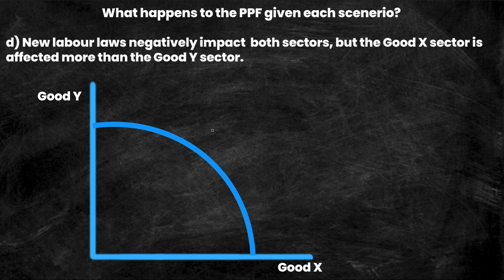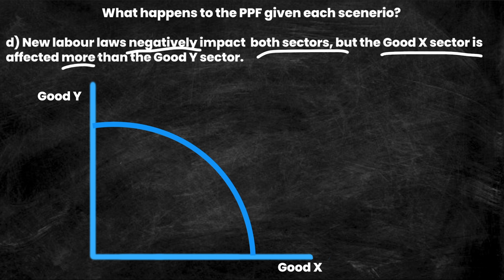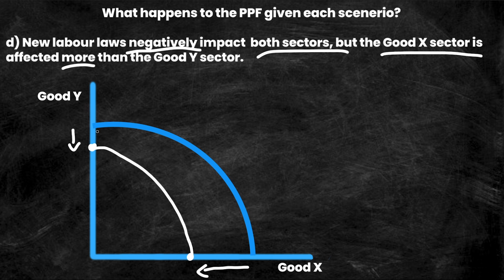Finally, example D: new labor laws negatively impact both sectors, but the good X sector is affected more than the good Y sector. Both intercepts move closer to the origin, but since good X is affected more, it shifts in closer to the origin than good Y. So we see a smaller decrease in Y and a greater decrease in X. Our new PPF curve shows both good Y and good X decreased, shifting to the left, but disproportionately more on the x-axis than the y-axis because the labor law affected the good X sector more.